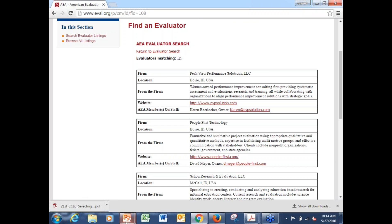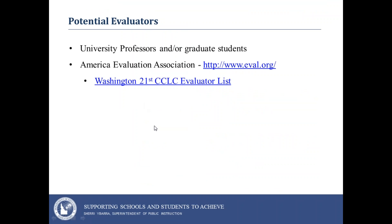I also included Washington's 21st CCLC evaluator list, which is based off of the same American Evaluation Association. However, they've gone through and identified key people who have evaluation experience in education or 21st-specific programs. I will send this PowerPoint to you so you can dive into that. The Washington list might be more applicable to our Northern Region 1 and Region 2 programs. As programs develop their evaluator, I might push that information out to others who are struggling to find one, and you guys can contact each other to see who you have.